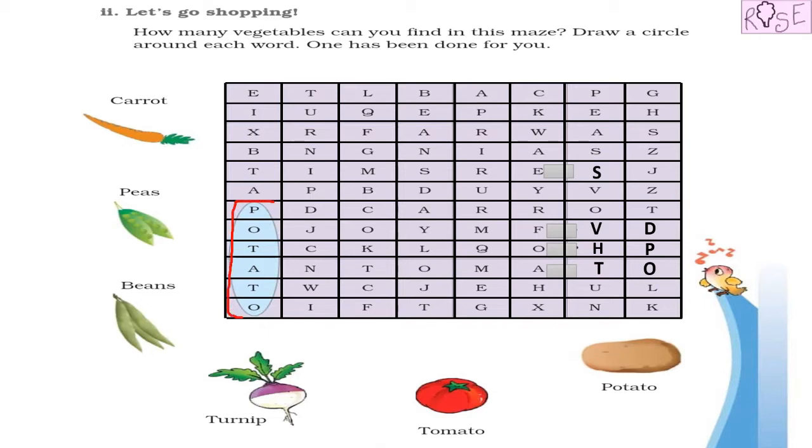So one has been done for us. See here, you can see one of the puzzles has been solved. Which vegetable have they found already? Potato. Yes, we don't have to find potato because it is already done for us.